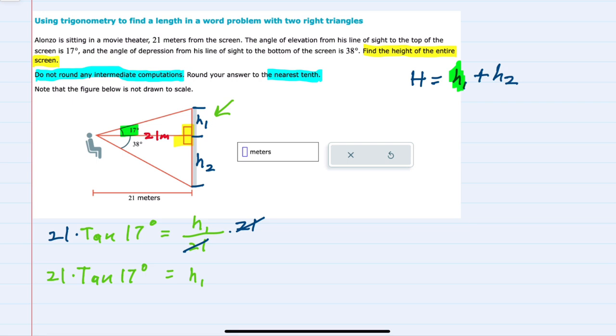By looking now at the bottom triangle. Here, our angle is 38. And again, h2 is the opposite side, and 21 is adjacent.